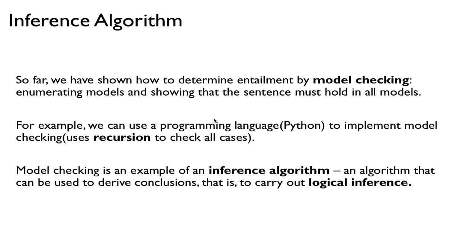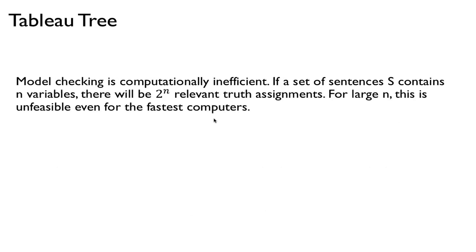We saw that in the last few videos. Model checking, however, is actually not very efficient. If you have a set of sentences S and it contains n variables or n symbols, then there will be 2 to the n relevant truth assignments, or 2 to the n rows of the truth table. And so for large n, this is exponential, and this is not even possible for even the fastest computers.